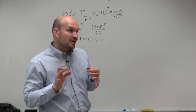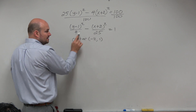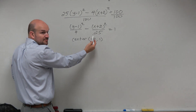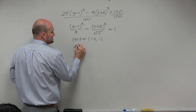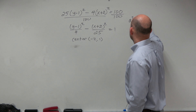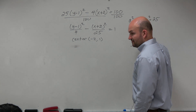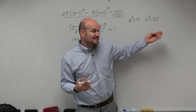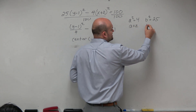Remember, our formula is a squared minus b squared. So if this were an ellipse — if this were a plus — a squared would always be bigger. But remember, the hyperbola is going to be different. So in this case, my a squared is equal to 4 and my b squared is equal to 25.